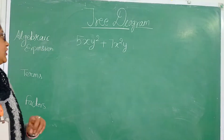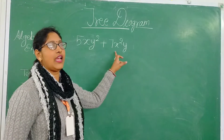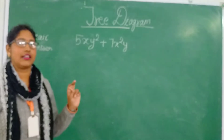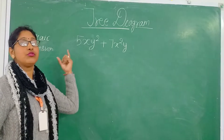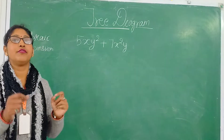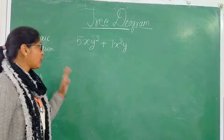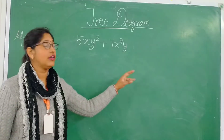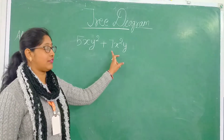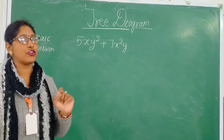Suppose we have an algebraic expression 5xy² plus 7x²y. In this algebraic expression we can see that we have two terms. Terms are parts of an algebraic expression which are separated by a plus sign. So in this algebraic expression we have two terms: 5xy² and 7x²y. We represent the terms with the help of solid lines.